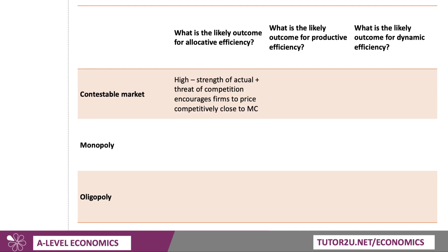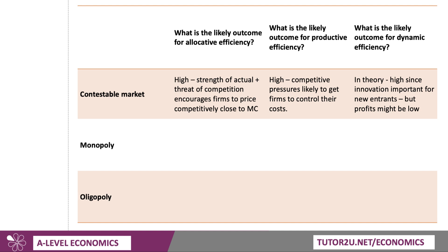Contestable markets first. The likely outcome is good for allocative efficiency — the strength of existing competition and the threat of entry often encourages firms to price low and competitively, close to marginal cost. When the threat of entry is low, firms can charge higher prices. For productive efficiency, competition is often a catalyst for firms to keep their unit costs under control, because if they don't, there's an opportunity for new firms to take market share. Dynamic efficiency in theory is quite high — innovation is critical to the battle for market share, and new entrants are often innovative, which is part of their driving force into the market.